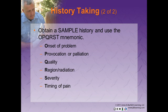The OPQRST mnemonic: O for onset of the problem; P for provocation or palliation — what makes it better or worse; Q for quality; R for region or radiation; S for severity on a scale of 1 to 10; and T for timing. You should also record any allergies, medical conditions, or medications the patient may be taking.